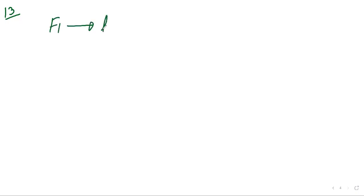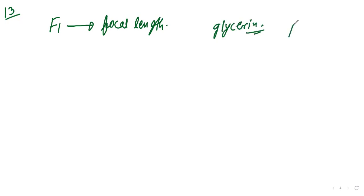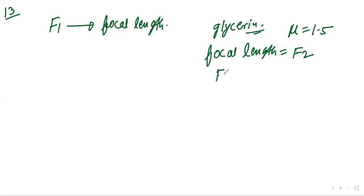Now see question number 13, which talks about two similar thin equi-convex lenses of focal length f. When they are kept coaxially in contact with each other, the focal length of the combination is f1. When the space between the two lenses is filled with glycerin, which has refractive index mu = 1.5, the equivalent focal length becomes f2. Then the ratio f1/f2 is asked — this is from 2019.